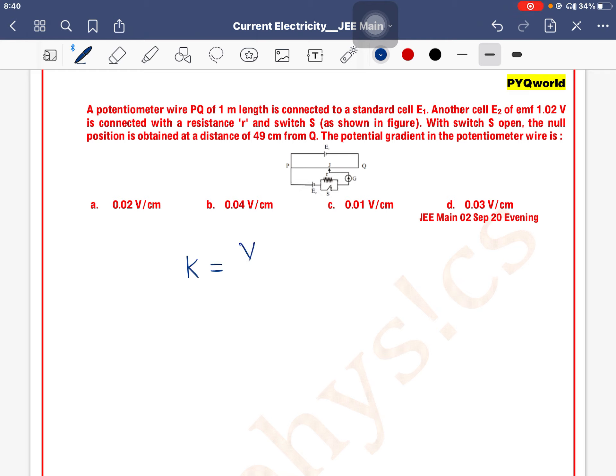Potential gradient K value is potential per unit length. Now here we have PQ value, but PQ across the voltage E1 is not given, right? Then what do we have to do?